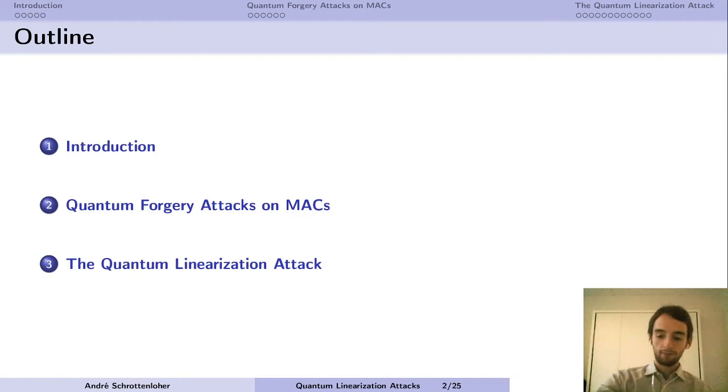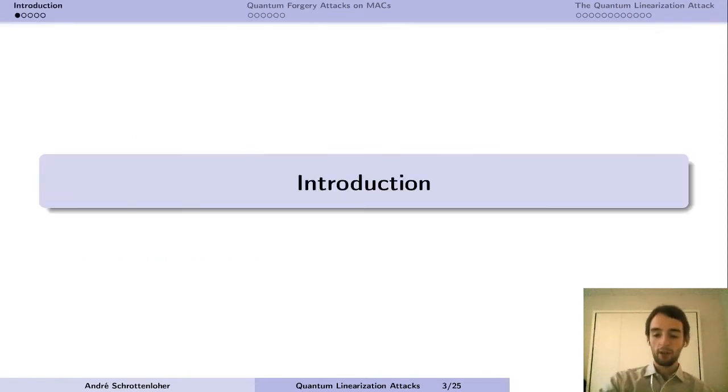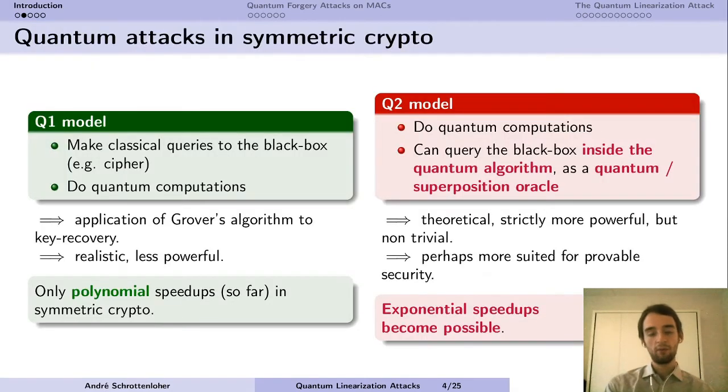So in symmetric crypto, when we come to the security against quantum adversaries, there are actually two main kinds of attackers we can consider. In the first setting, what we call the Q1 model, the adversary can do quantum computations.